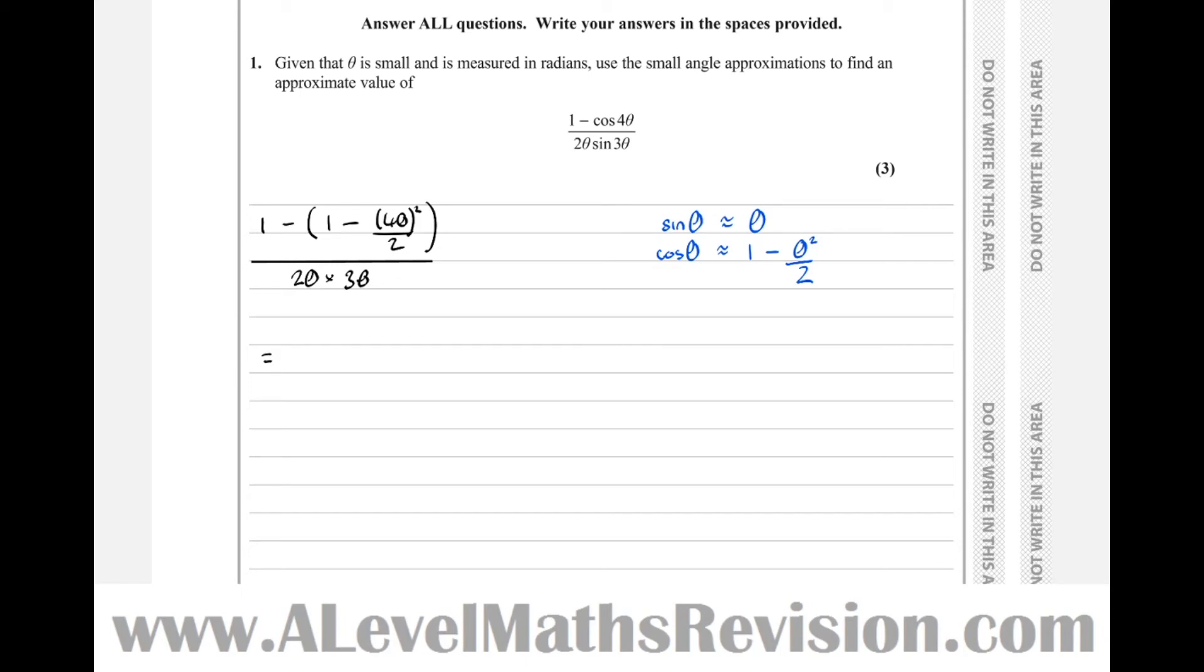Well, 1 take 1 is 0, and a double minus 4 theta squared over 2. 4 theta squared is 16 theta squared over 2. So 16 theta squared over 2 is 8 theta squared. Over 6 theta squared equals, so the theta squareds cancel, to give 8 over 6, which is 4 thirds.